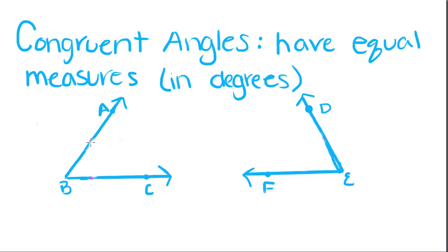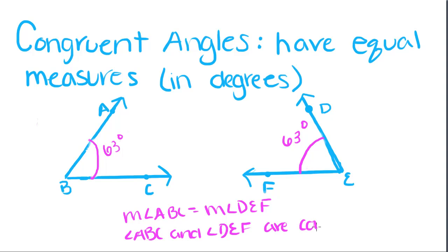So we have right here angle ABC. And if we measured it, we would find that the measure of angle ABC is about 63 degrees. And over here, we have angle DEF. And if you measured that, you would find out that that is about 63 degrees as well. So since the measure of angle ABC equals the measure of angle DEF, we can say that angle ABC and angle DEF are congruent angles.